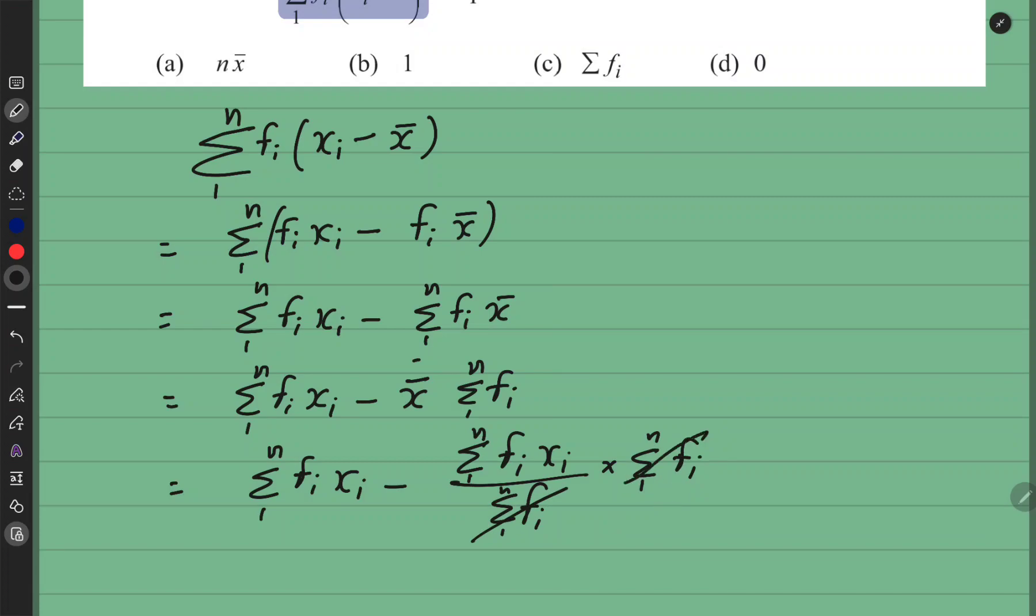Ye dhekho ye same ho ga ya cancel ho ga. Thik hai? Kya bacha? Summation one to n fi xi. Or yehaan bhi fi xi. Answer kya a ga ga? Zero.